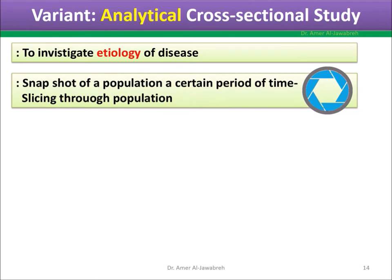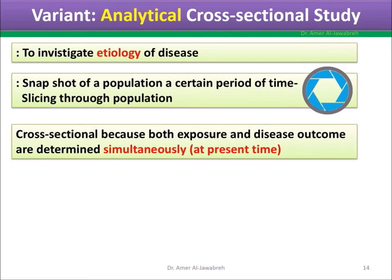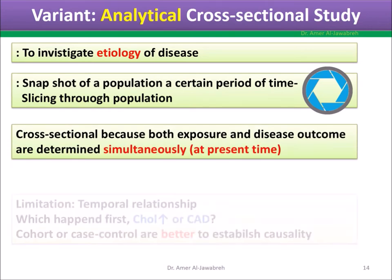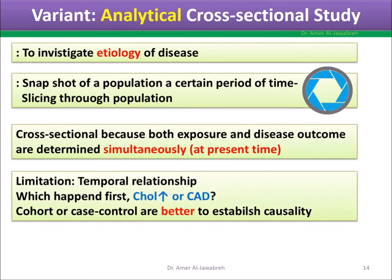A cross-sectional study is a snapshot or a slice through a population at a certain period of time. Both exposure and disease are determined simultaneously. Limitation: which happened first — exposure or disease? Therefore, cohort or case control studies are better to establish causality.